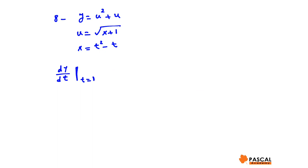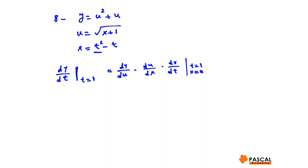Question number eight: if y equals u squared plus u, u equals square root of x plus 1, and x equals t squared minus t, find dy dt when t equals 1. By the chain rule, dy dt equals dy du times du dx times dx dt. When t equals 1, x equals 1 squared minus 1 which is 0, and u equals square root of 1 which is 1.